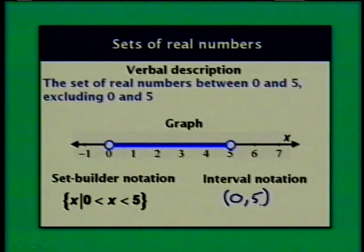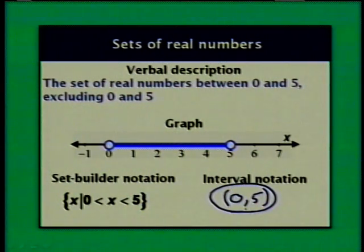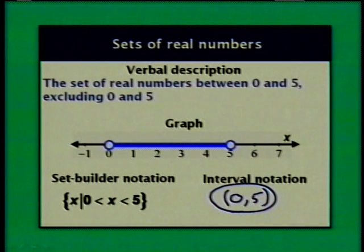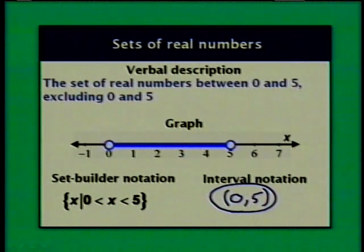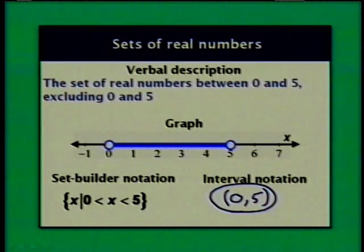One caution: the notation (0, 5) could be ambiguous by itself — in this context it represents an interval of real numbers, but we've seen the same notation represent a point in the coordinate plane, which would lie on the vertical axis. In the context of the math we're doing it will usually be clear whether we're describing an interval or an ordered pair, but if you have any question about what the notation signifies, make sure you ask.